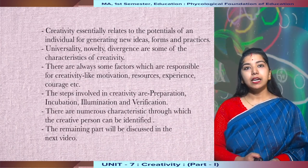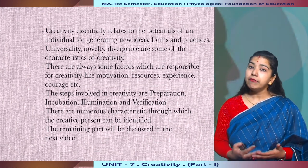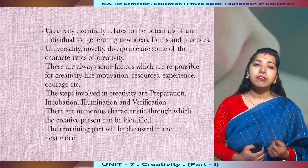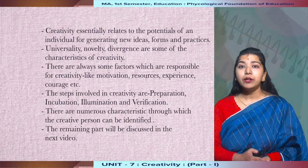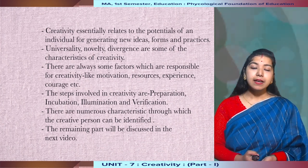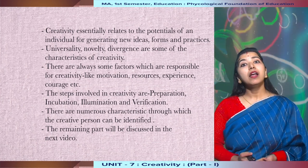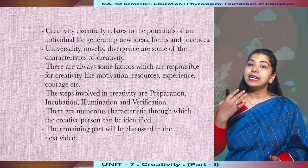We have come to the last part of this discussion. What have we discussed? We have discussed about creativity, which is essentially a potential of an individual for generating new ideas, forms, and practices. There are characteristics such as universality and novelty. There are factors responsible for creativity — motivation, resources, courage, and experiences. We have also discussed about the steps involved in creativity: preparation, incubation, illumination, and verification. Then there are a number of characteristics through which we can identify a creative person. In the second part, we will discuss about the remaining part of unit 7. Thank you.